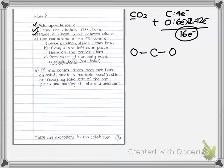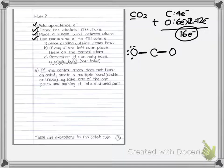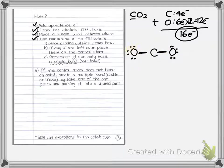Step four: use remaining electrons to fill the octets. I've only used four electrons with the single bonds, so I have 12 more. I place them on the outside oxygens, giving each oxygen eight electrons. After placing all 16 electrons, both oxygens are satisfied. But now I'm in trouble — there are no electrons left over, so I move to step five.